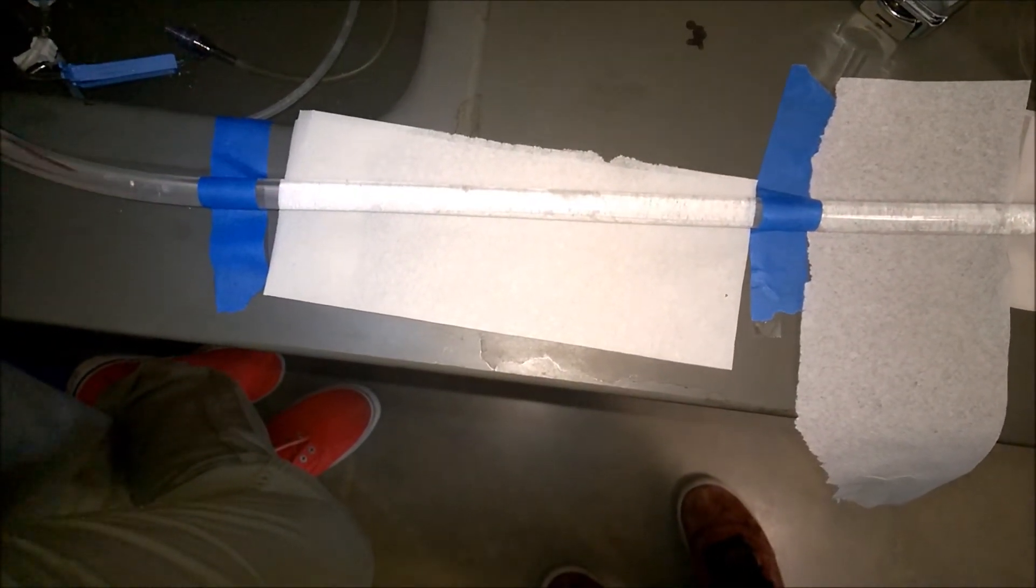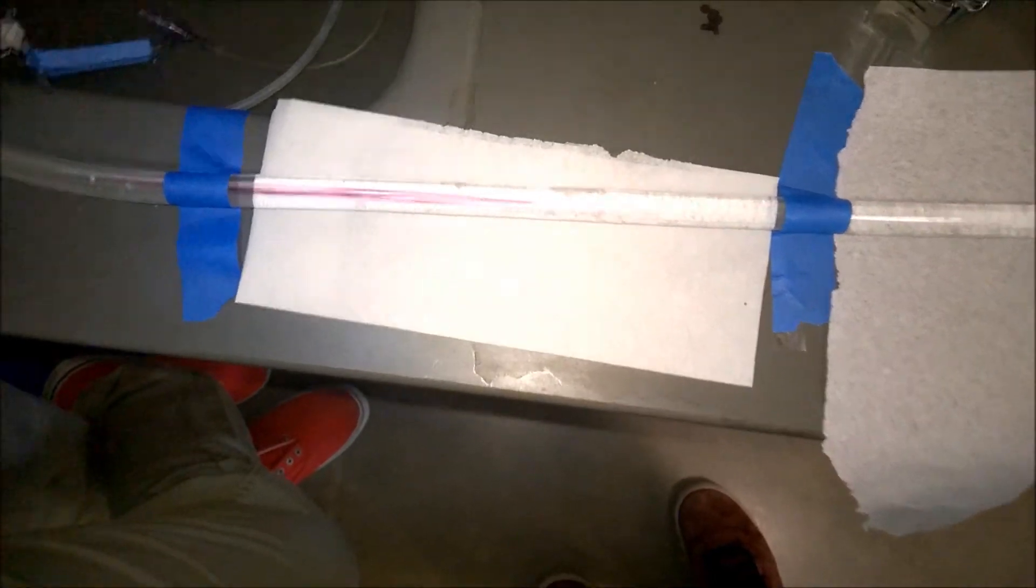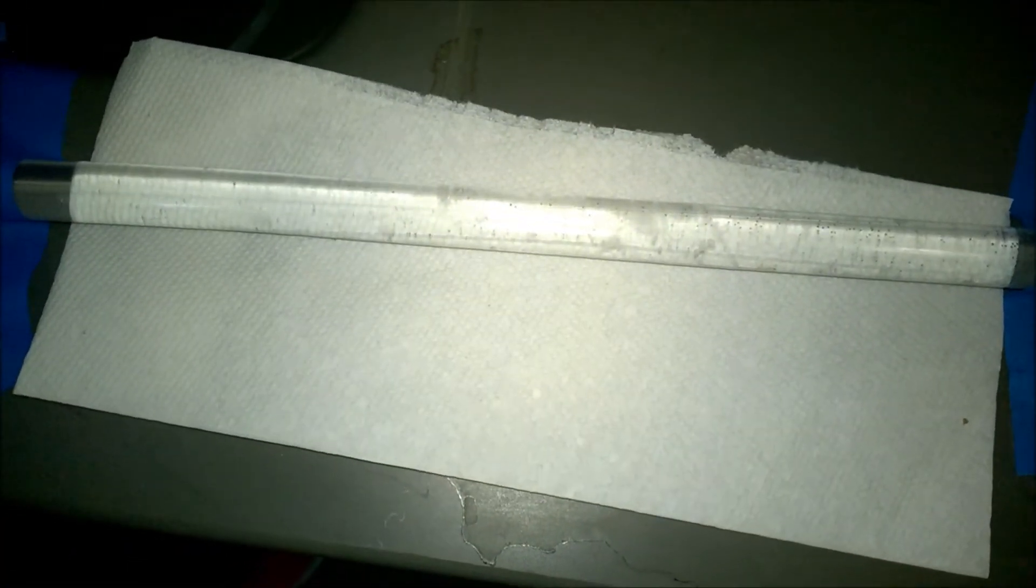As can be seen here, the injected dye does not display lateral mixing. The Reynolds number for this particular test was approximately 1,600, putting it within the laminar region.